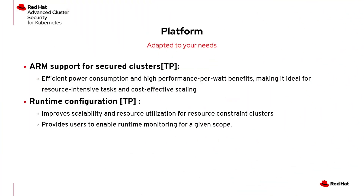ACS now supports running secured clusters on ARM architecture in Tech Preview, offering advantages like improved power efficiency and performance per watt. This is ideal for teams aiming to optimize resource utilization while minimizing energy consumption in large-scale data centers and cloud environments. Additionally, ACS introduces runtime configuration, allowing users to enable resource-intensive features on specific clusters. The first use case for runtime configuration is enabling the External IPs feature.